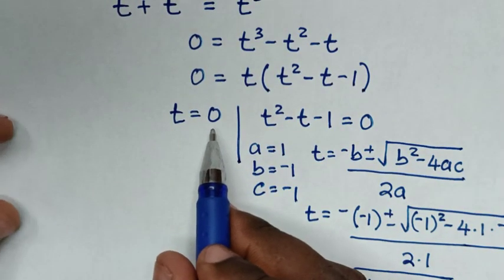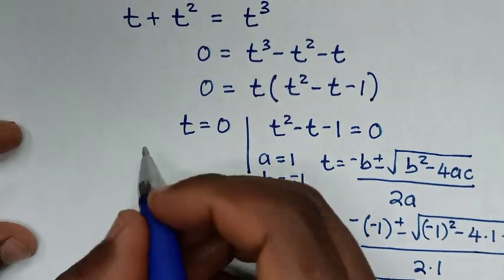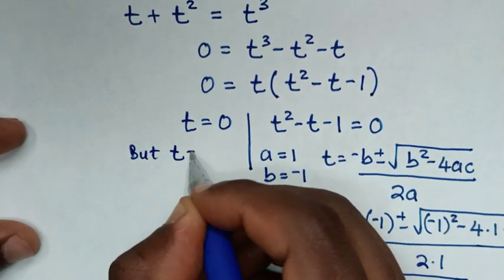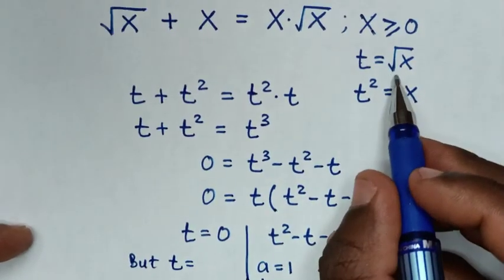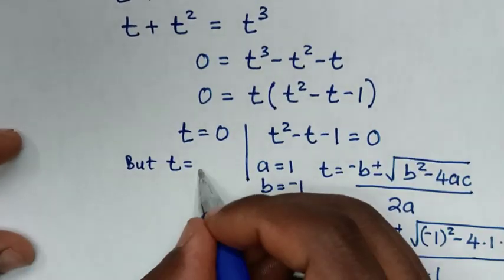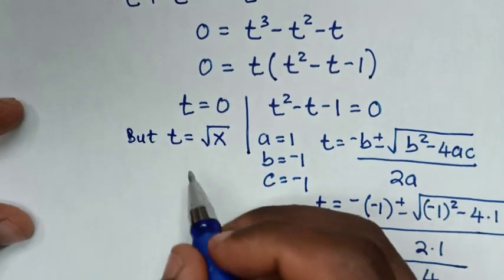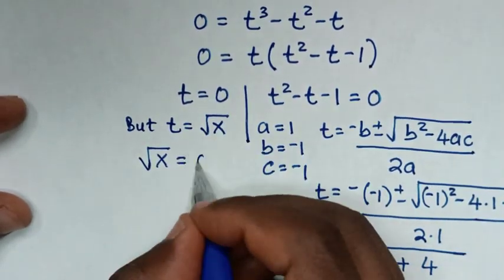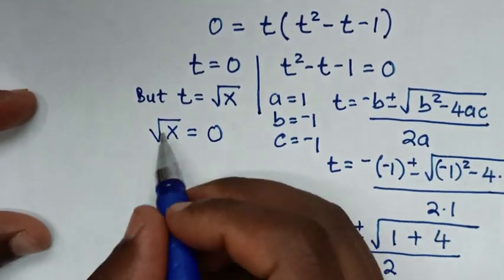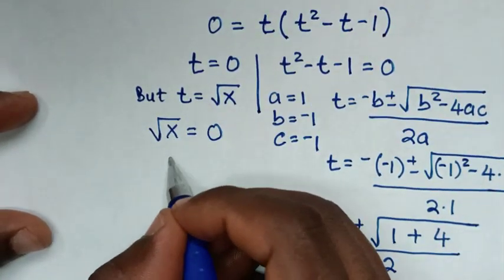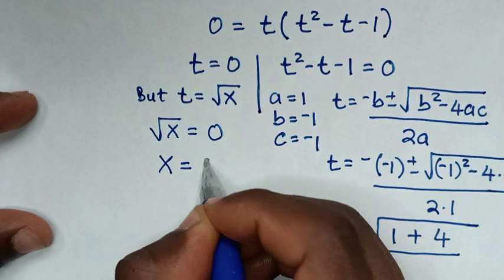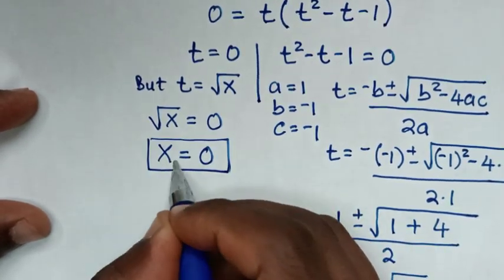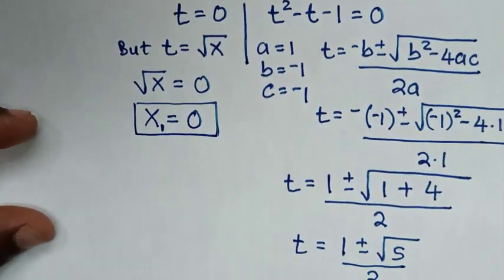Recall that t equals square root of x. For the first solution t equals 0: square root of x equals 0, and squaring both sides gives x equals 0. Therefore, this is the first value of x.